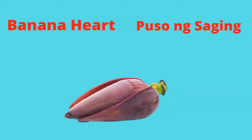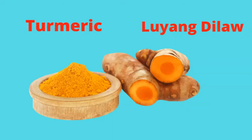Banana heart — puso ng saging. Turmeric — luyang dilaw.